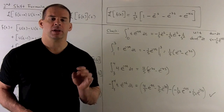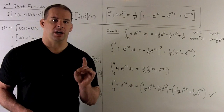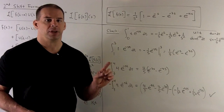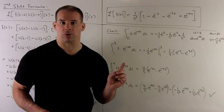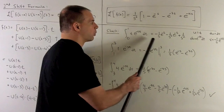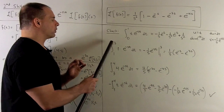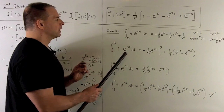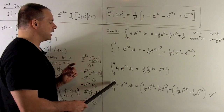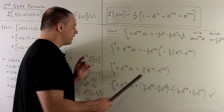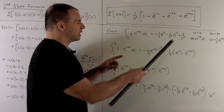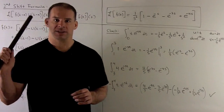Now we check our work by computing the Laplace transform using the definition directly. We have different functions over different regions, so we compute each separately: from 0 to 1 we integrate t times e to the minus st dt, requiring integration by parts; from 1 to 3 we integrate 1 times e to the minus st, which integrates directly; and for 4 minus t we split into two more integrals, one direct and one by parts — the same integration by parts as the first. Working through the bookkeeping confirms the answer we got using the second shift formula.